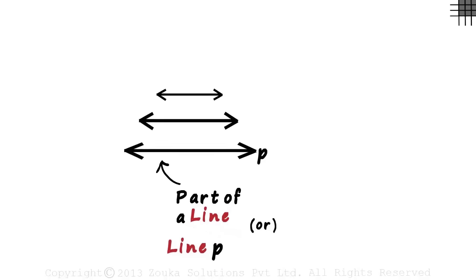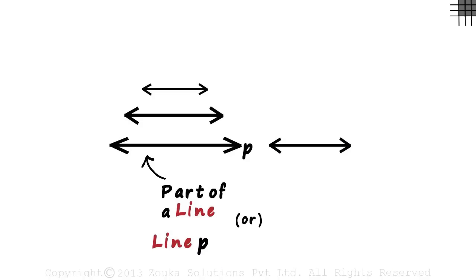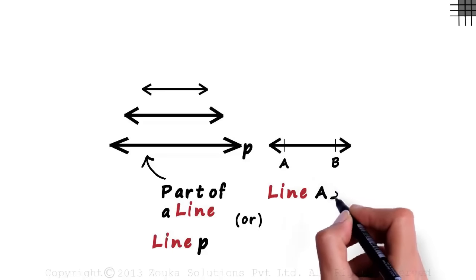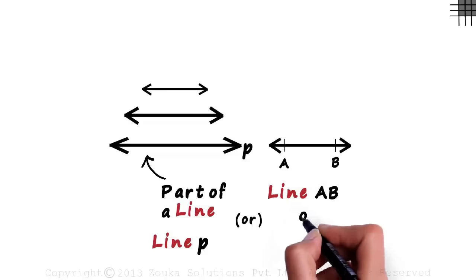Or we can draw a line like this and mark two points A and B. This will be called line AB. Line AB can also be written as AB with a tiny line drawn over AB.